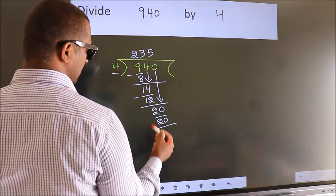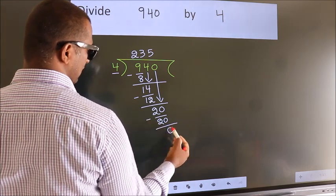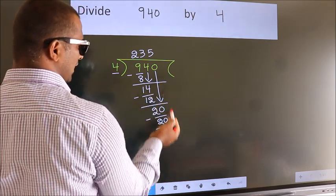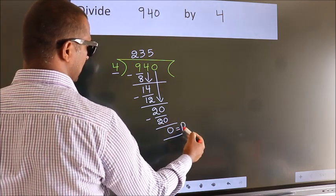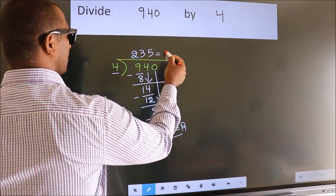Now we subtract. We get 0. No more numbers to bring down. So we stop here. This is our remainder. This is our quotient.